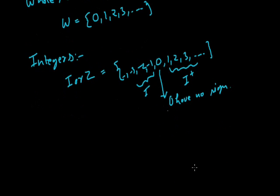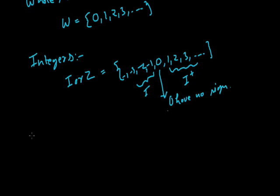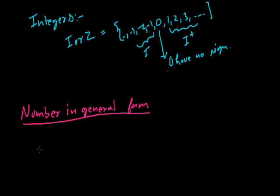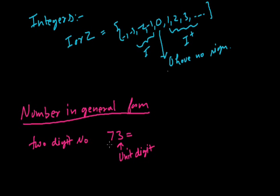So those are the basic numbers. Now we see how we can write a given number in general form. Let's say if I have a two digit number, let's say 73. So if I write in general form, in 73, 3 is the unit digit because it is written at the unit place, and 7 is the tens digit because it is written at the tens place. And if I write in general form, I write tens digit that is 7 into 10, plus unit digit that is 3 into 1. So this is the number in general form.